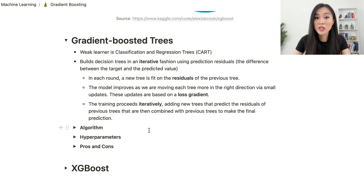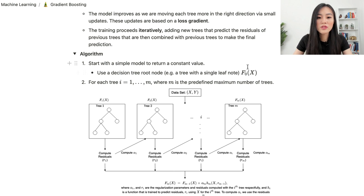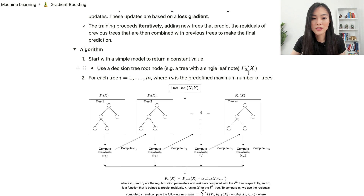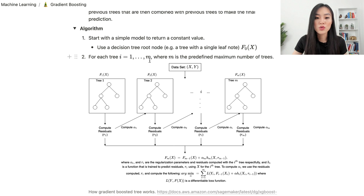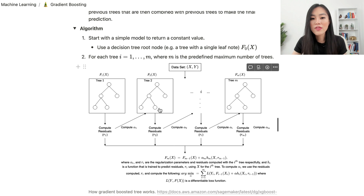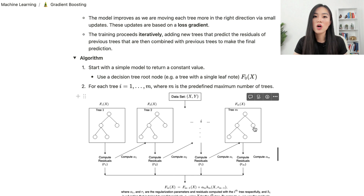Sometimes interview questions ask about the architecture of gradient boosted trees, so it's helpful to know the algorithm step by step. We start with a simple model returning a constant value — a tree with a single leaf node, call it f₀(x). For each tree i from 1 to M, where M is the predefined maximum number of trees, we compute the residual rᵢ, calculate the learning rate alpha, build a new tree, add it to the ensemble, and continue. Finally, we combine the predictions of all trees to output the final prediction.